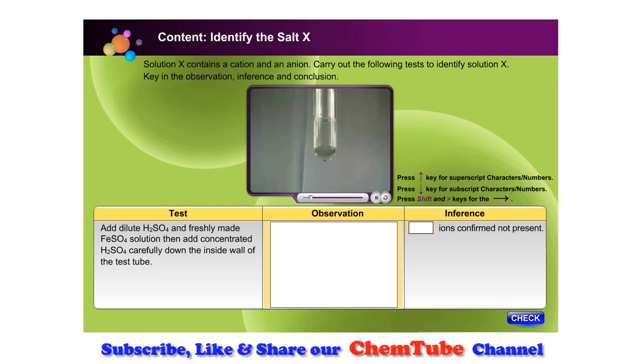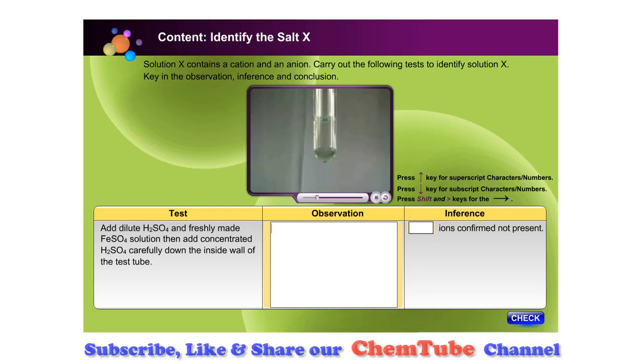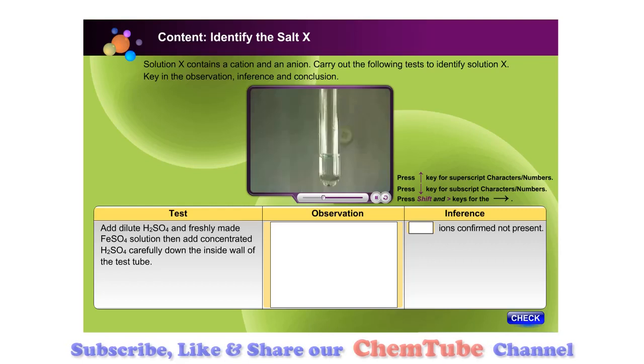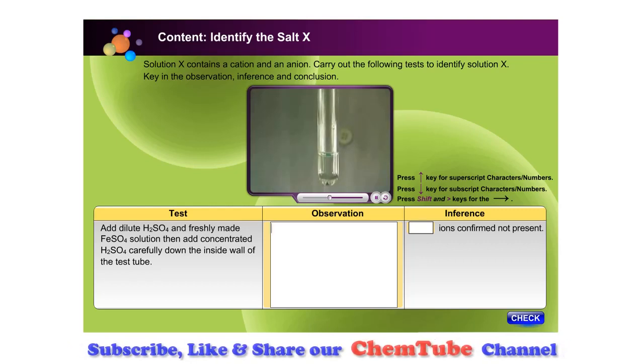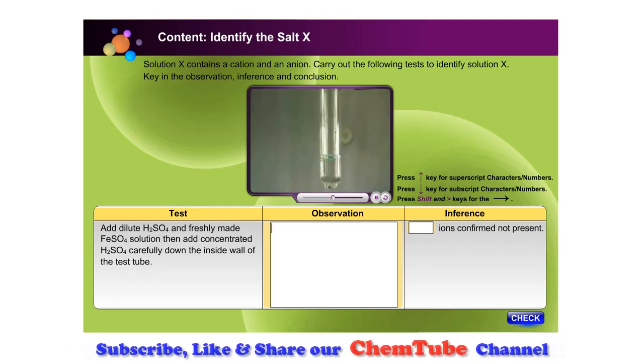Add dilute sulfuric acid and freshly made iron sulfate solution, then carefully add concentrated sulfuric acid down the inside wall of the test tube.